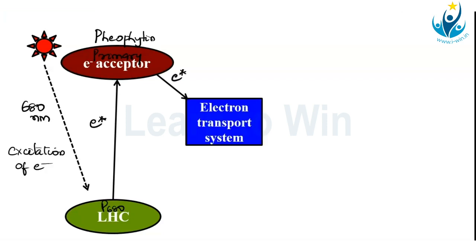They move to an electron transport system. Now this electron transport system consists of three sets of electron carriers: one is plastoquinone, another is cytochrome B6 and cytochrome F, and another one is plastocyanin. So three electron carriers that carry the electrons from Pheophytin to the next stage.